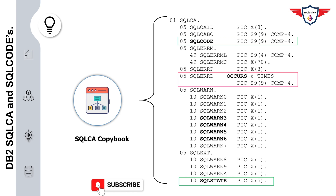The next important variable is SQLWARN. It is a group variable that acts as a warning indicator. The possible value of all these variables is either blank or W. The SQL Communication Area is a vital diagnostic tool that helps you understand whether your SQL statement executed successfully or failed, so it's always a good idea to include it in your COBOL DB2 program.